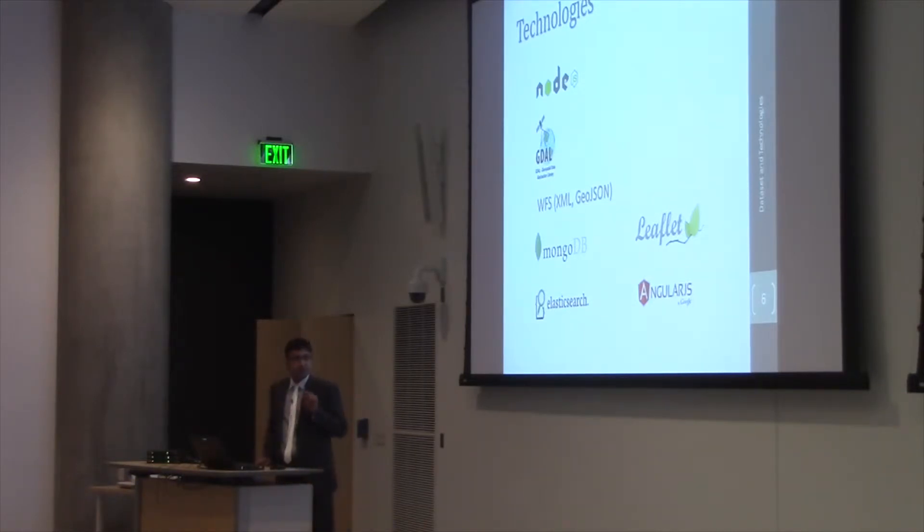Once the features are converted to the GeoJSON format, I save them into the MongoDB. And after saving them into the MongoDB, I index those features into the Elasticsearch. And after indexing of the features in the Elasticsearch, I use the leaflet-based plugin available for Elasticsearch, which is written in AngularJS to set up a web mapping application.